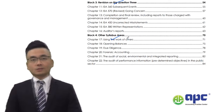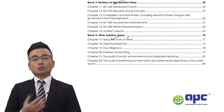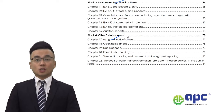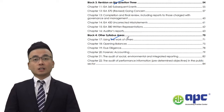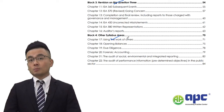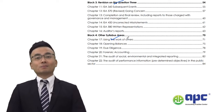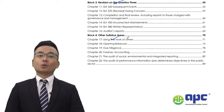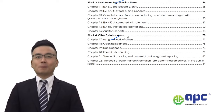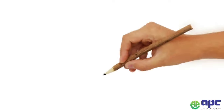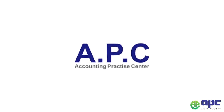Don't forget there will be lots of easy marks in the AAA paper — such as in question 1, the determination of materiality, and the conclusion paragraph to watch out for. I look forward to your exam success for the March 2024 ACCA AAA paper. Best of luck. APC — accounting for your future.